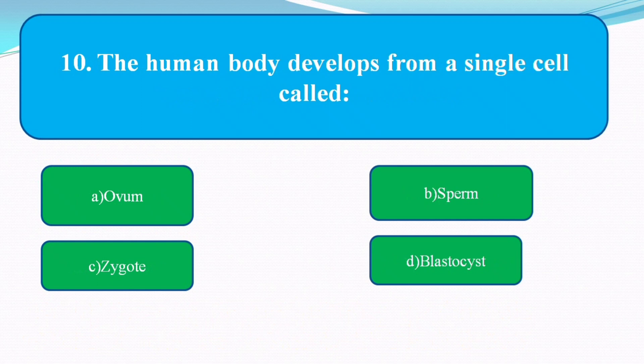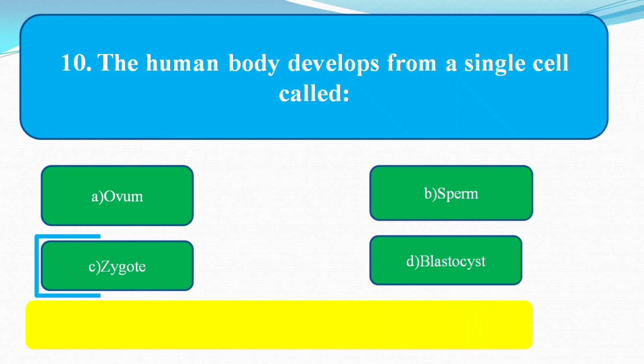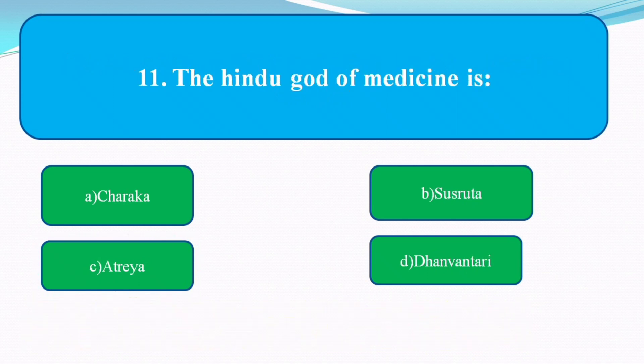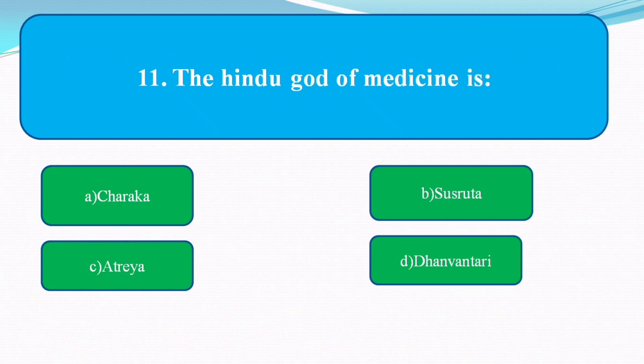The human body is developed from a single cell called? The answer is zygote.